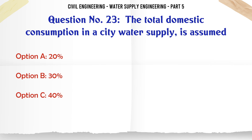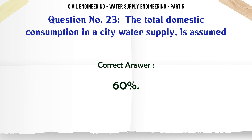The total domestic consumption in a city water supply is assumed to be: A. 20%, B. 30%, C. 40%, D. 60%. The correct answer is 60%.